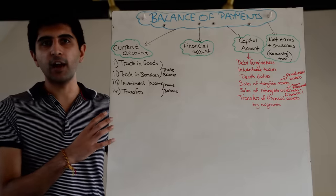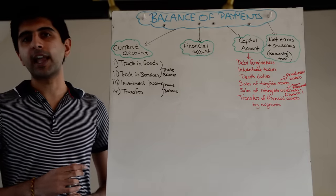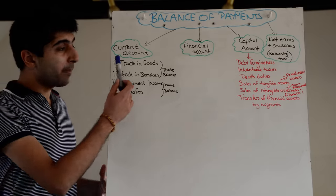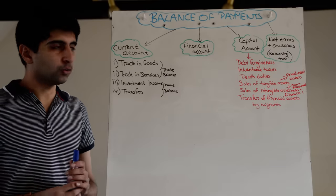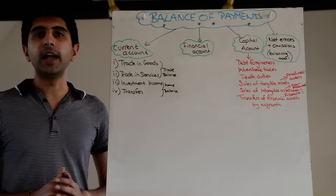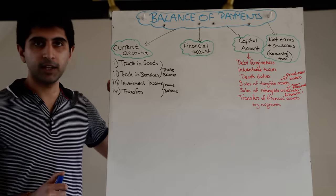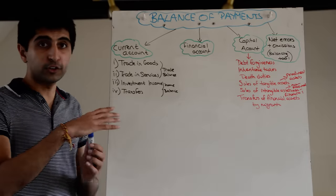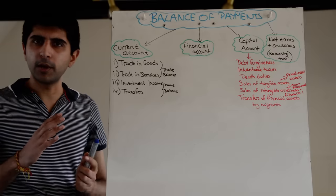I'm not going to focus on the current account because I've already done a video on that. If you're not sure of the current account of the balance of payments then watch my video on it. Remember it consists of the trading goods and trading services sections, which together constitute the trade balance. It also looks at two income parts: the primary income balance, known as investment income, and the transfers balance, known as secondary income. Together that gives us our total income balance. That's all just recap of the current account.